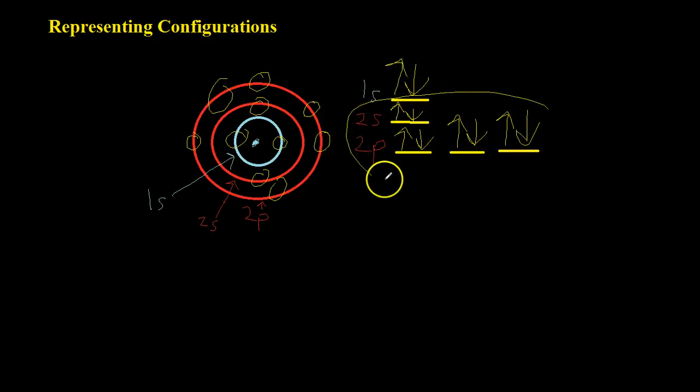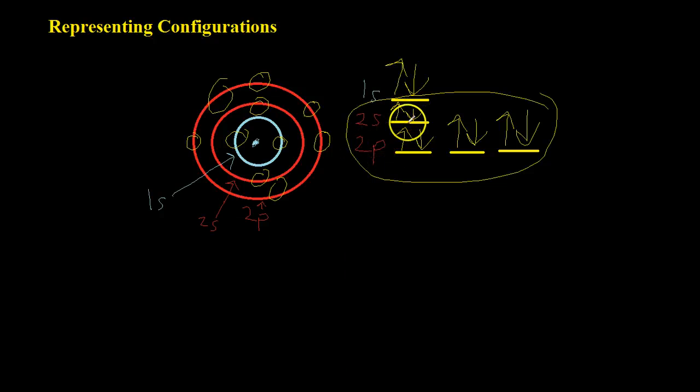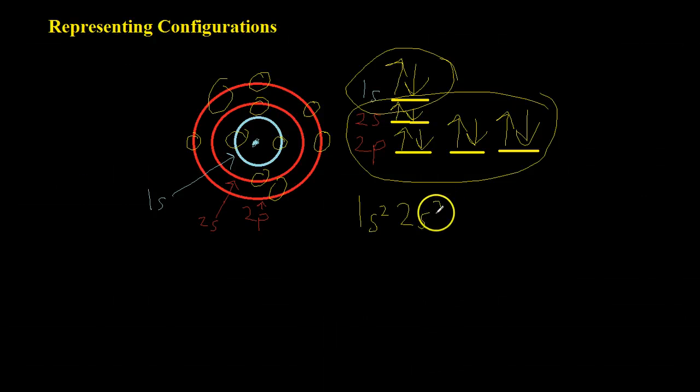And these all here in this second energy level are valence electrons because these are in the reactive outer shell, whereas these 1s2 are what are called inner shell electrons. And if you wanted to write this all in electron configuration notation, you would put the 1s with 2 electrons, 2s with 2 electrons, and 2p with 6 electrons. And that corresponds to neon on the periodic table.